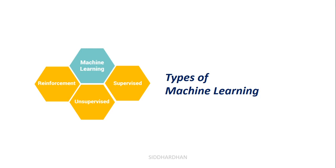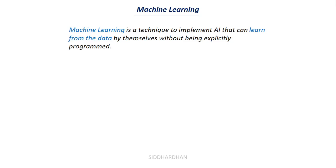First I'll explain what is meant by machine learning with an example, then we will look into all the different types. Machine learning is a technique to implement artificial intelligence that can learn from data by itself without being explicitly programmed. The ultimate goal in machine learning is to make intelligent machines, and we do this by making the machine learn from data. We don't explicitly program the machine — we don't tell it exactly what to do; it has to find those ways by itself.